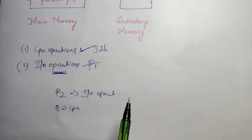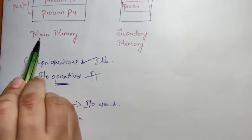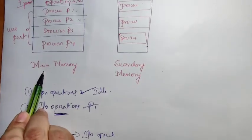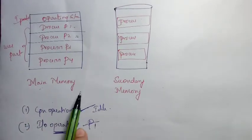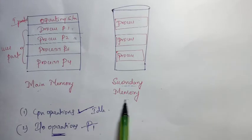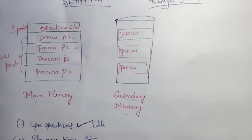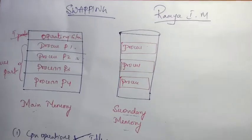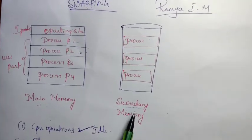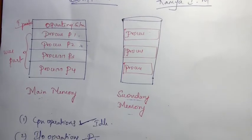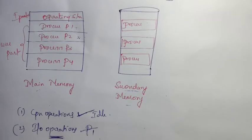The CPU can access only the contents of main memory. It cannot access the contents of secondary memory directly. Therefore, the CPU can execute a program if and only if it is present in the main memory.